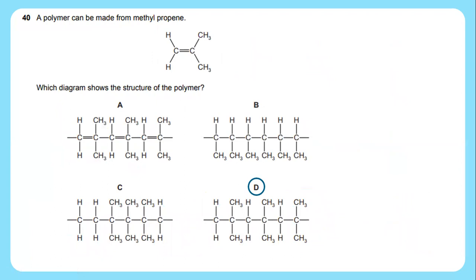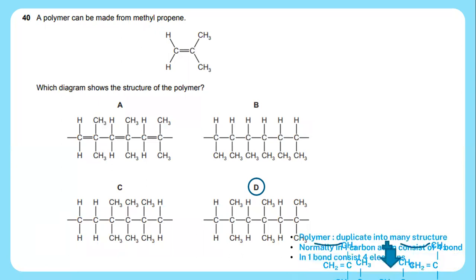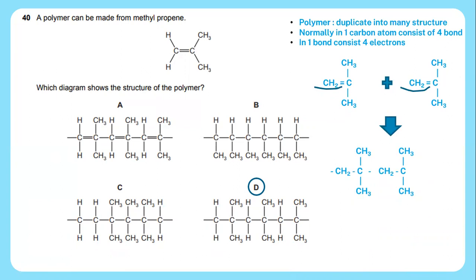Question 40: A polymer can be made from methyl propene. Which diagram shows the structure of the polymer? Polymer is a duplicate into many structures. Normally one carbon consists of four bonds and one bond consists of four electrons. From this equation you can break up into many duplicate structures of polymer. From CH2, CH3 and CH3, you can duplicate into many moles to form the structure of polymer as per diagram D.